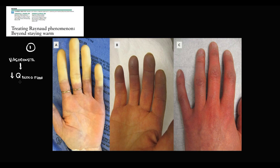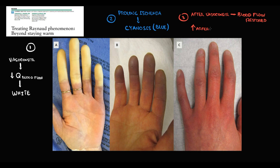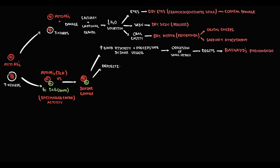As a result of decreased blood flow, ischemia develops and digits become white. The second step is that prolonged ischemia causes cyanosis of fingers and they become blue. The third step occurs after vasoconstriction is gone — blood flow is restored and the influx of arterial blood causes redness. Deposition of immune complexes in the blood vessel wall can provoke vasculitis, and most commonly vasculitis manifests with purpura.